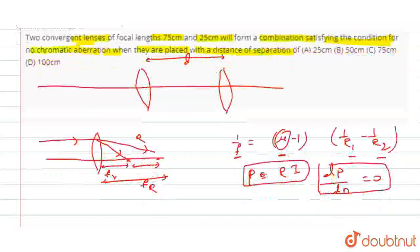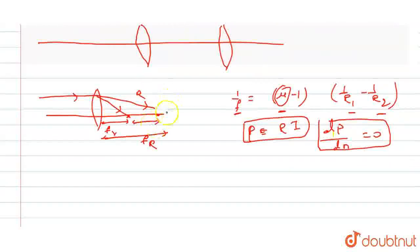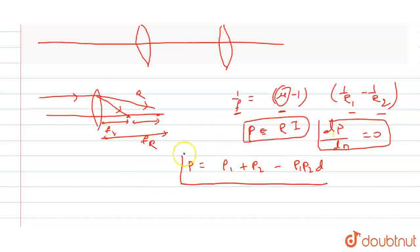So now, let's solve this. If the power of the system is zero, the power of the system is zero. If we talk about individual lens, what is the power? 1 upon f is the power.